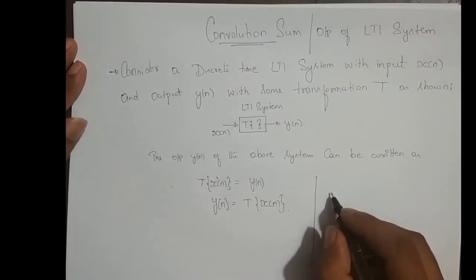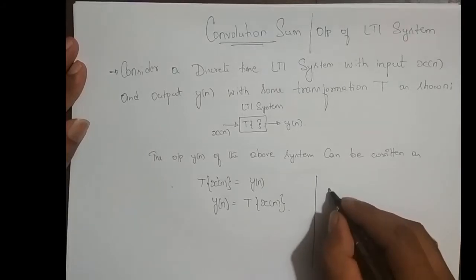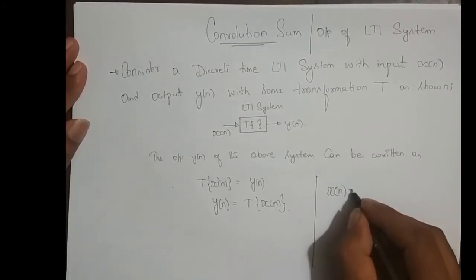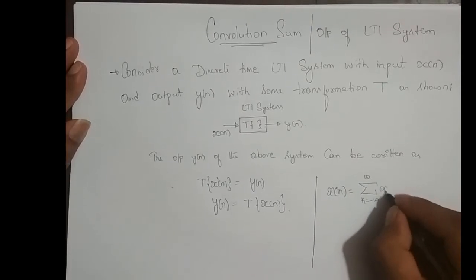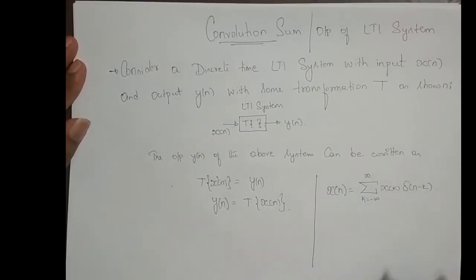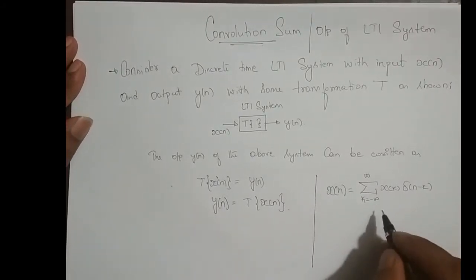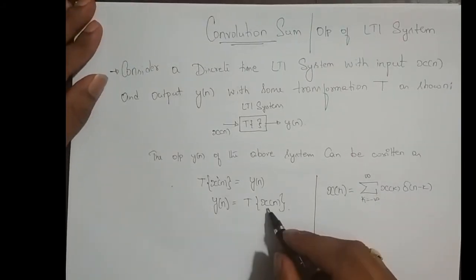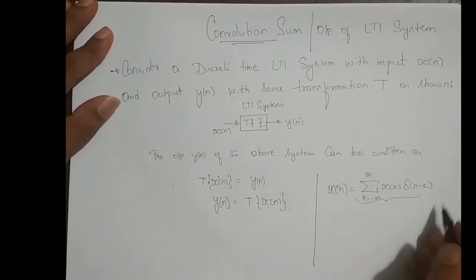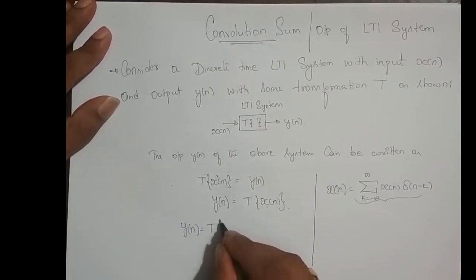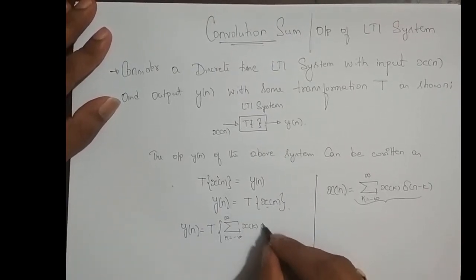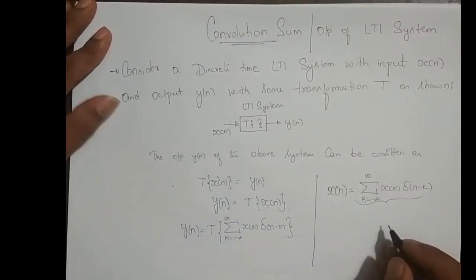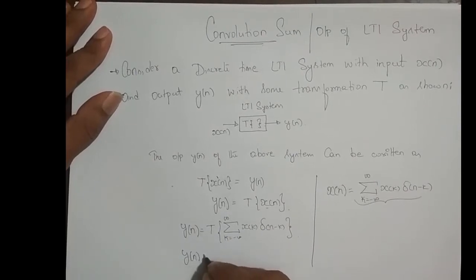We discussed in previous prerequisite videos that any discrete-time signal X[n] can be represented in a compact form as the summation over K from minus infinity to infinity of X[K] times delta[n minus K]. If you want more explanation on this, you can watch the previous video. So instead of writing X[n], I write this compact representation of X[n], giving us Y[n] = T{ summation from K = -∞ to ∞ of X[K] · δ[n−K] }.